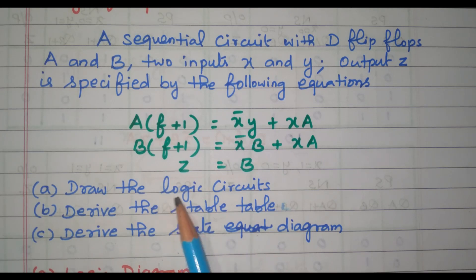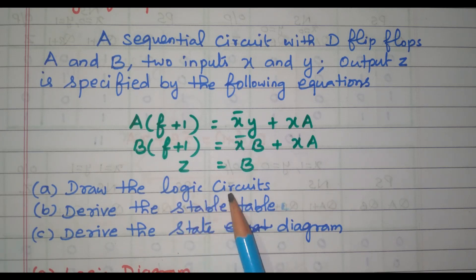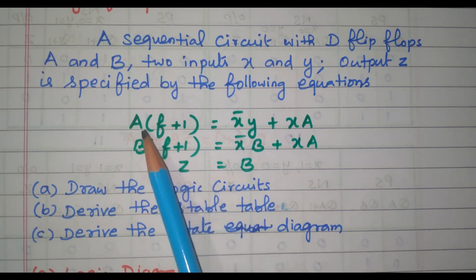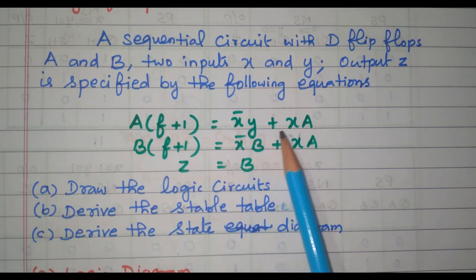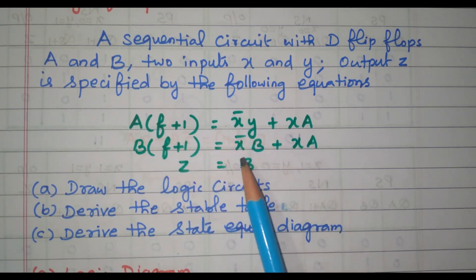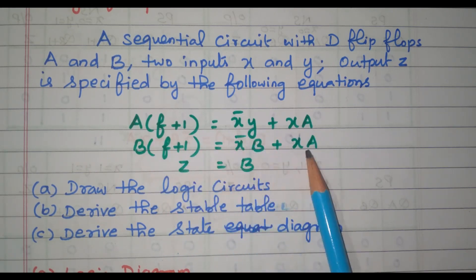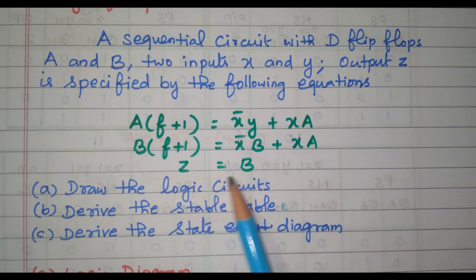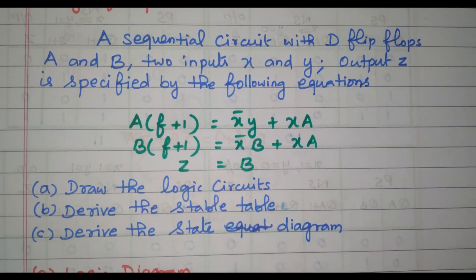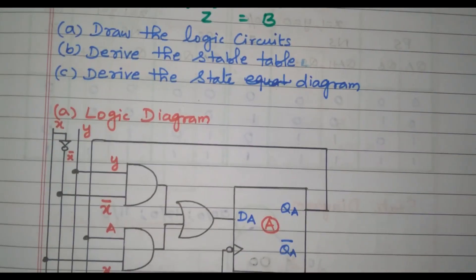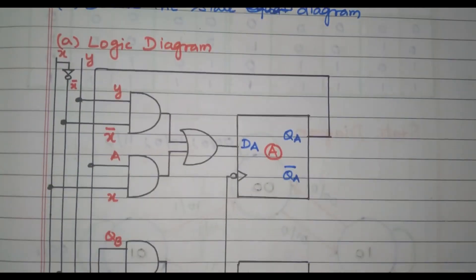First we will go to the logic circuit — logic circuit is very easy. A(t+1) is X-bar·Y plus X·A, B is X-bar·B plus X·A, Z is B. So based on that we can design the logic circuit. Now we will go to the logic circuit.